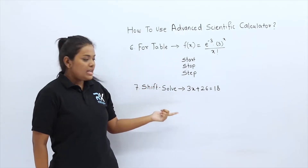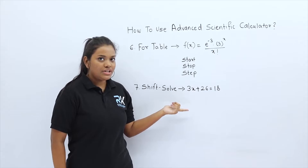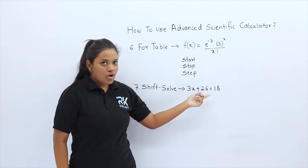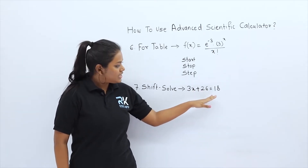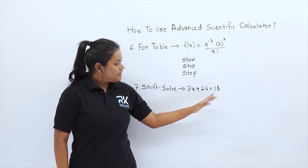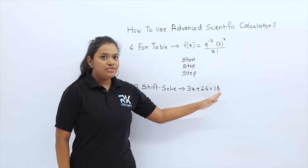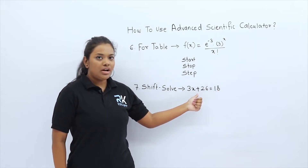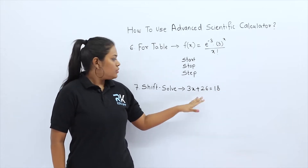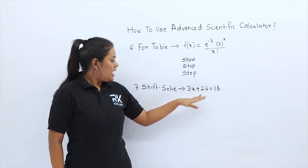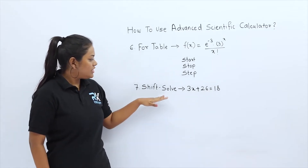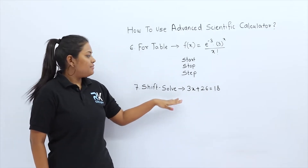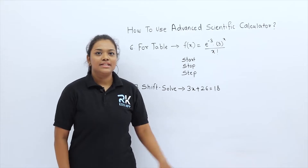Then we will see how to use the shift solve function. For shift solve we need an equation that has a left hand side as well as a right hand side with one unknown. When we enter this equation and use shift solve, we get the value of x.